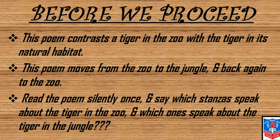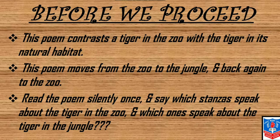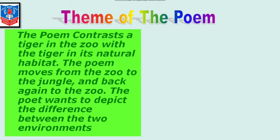Before we proceed with the poem, I would like to go through these points. This poem contrasts a tiger in the zoo with the tiger in its natural habitat. The poet has discussed two points: one tiger is kept in the zoo and another is kept in its natural habitat. This poem moves from the zoo to the jungle and back again to the zoo. Read the poem silently once and say which stanzas speak about the tiger in the zoo and which speak about the tiger in the jungle. This is the only theme of the poem.